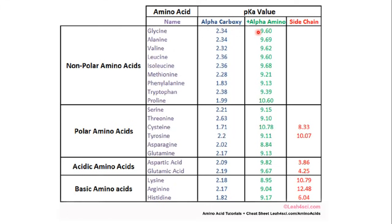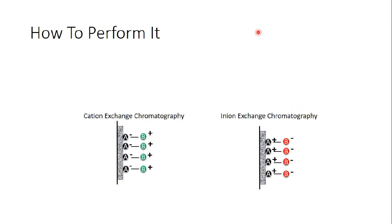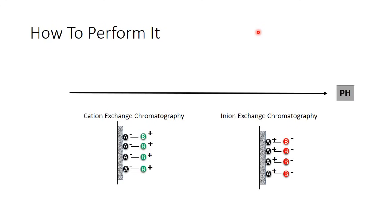Now let's go back to ion exchange chromatography and how to perform it. Before everything, we must choose between cation exchange and anion exchange chromatography — and this depends on the protein we need to separate. Looking at the pH gradient from 1 to 10: if my protein has an isoelectric point of 5, and the pH of the solution is lower than 5, our protein will be positively charged; if the pH is higher than 5, our protein will be negatively charged, and we should apply anion exchange chromatography.